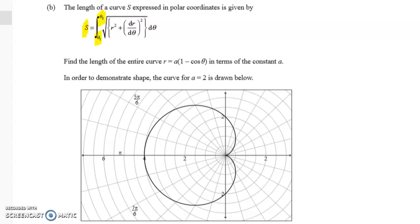So we've got two limits here and they're going to be angle values. We're going to obviously be working in radians and then we have to figure out this thing here. And we have to find the length of the entire curve r equals this in terms of the constant a.